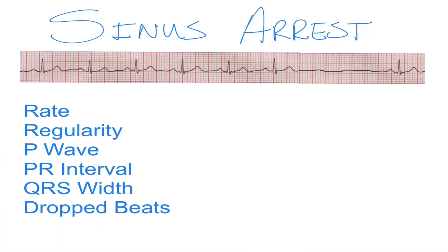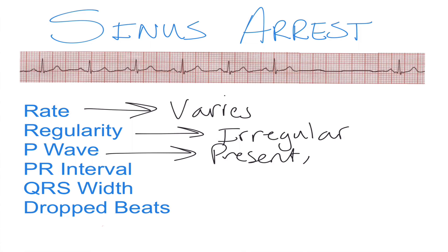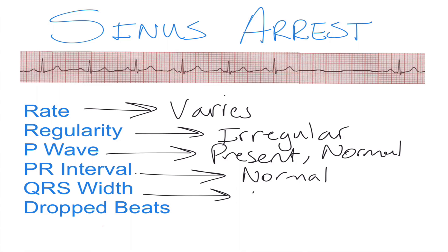In this video we're going to look at something called sinus arrest. With sinus arrest, you're going to have a rate that varies — it's an irregular rhythm, as you can see from the strip above. The P waves are going to be present and normal, and the PR interval as well as the QRS width are also going to be normal.